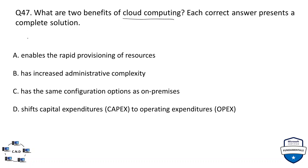The options are: A) enables rapid provisioning of resources, B) has increased administrative complexity, C) has the same configuration options as on-premises, and D) shifts capital expenditure (CapEx) to operating expenditure (OpEx). The correct options are A and D.